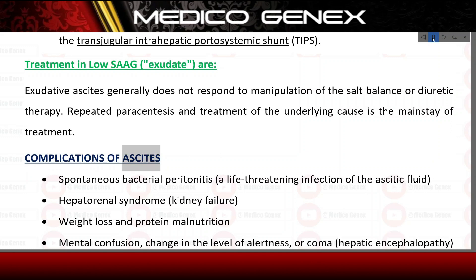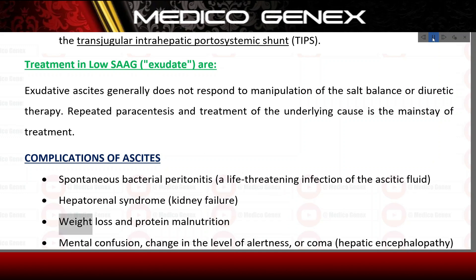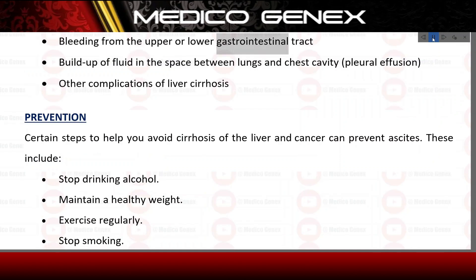Complications of ascites include: spontaneous bacterial peritonitis — a life-threatening infection of the ascitic fluid; hepatorenal syndrome — kidney failure; weight loss and protein malnutrition; mental confusion, change in the level of alertness, or coma — hepatic encephalopathy; bleeding from the upper or lower gastrointestinal tract; and buildup of fluid in the space between the lungs and chest cavity — pleural effusion.